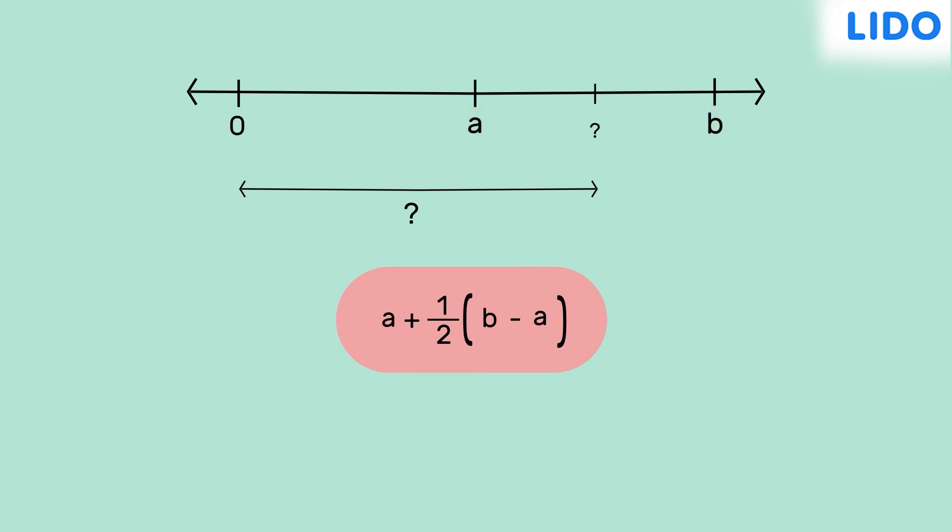the result here will also be a rational number. If we simplify this expression further, we get a plus b upon 2 minus a upon 2, which is equal to a plus b the whole divided by 2. This is the average of the numbers a and b. It means that to find a number exactly halfway between the numbers a and b, we take the simple average of a and b.